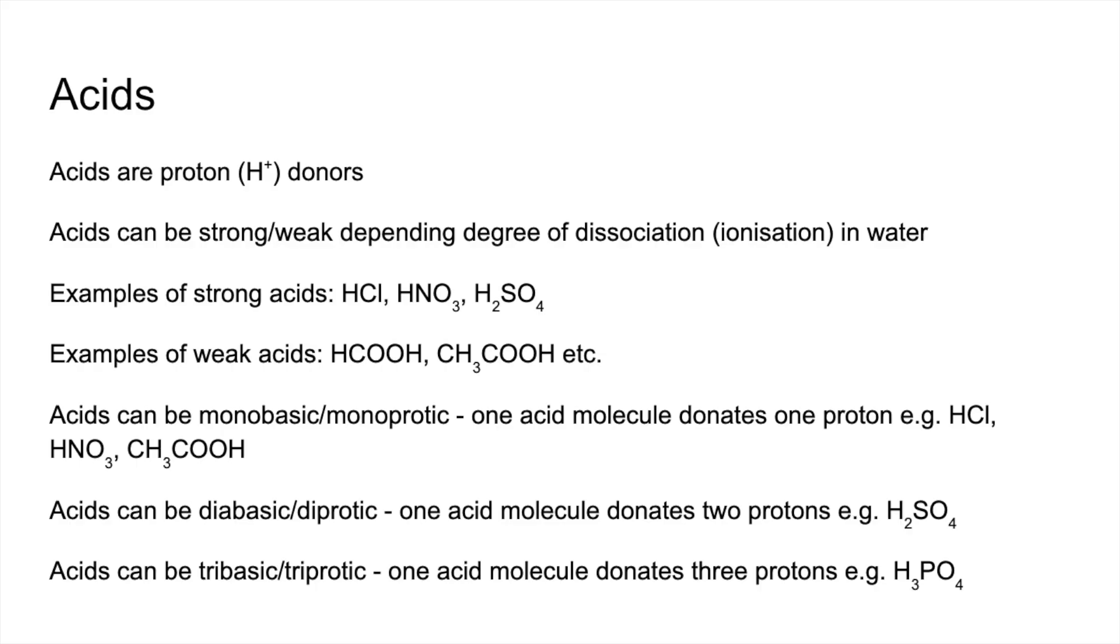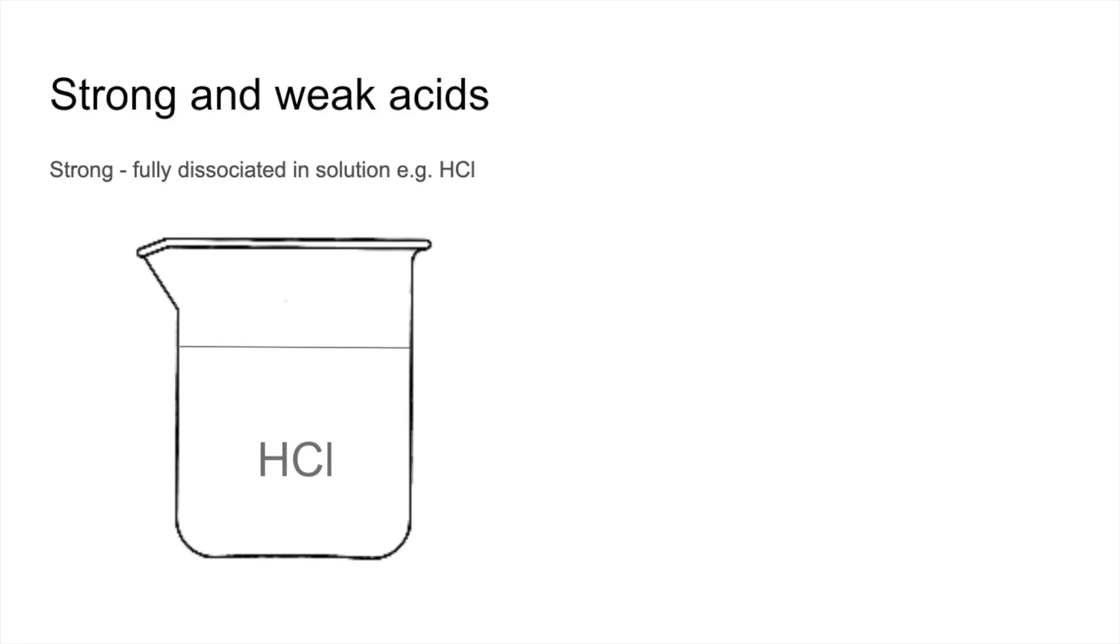So we'll take a closer look now at strong and weak acids. Strong acids are fully dissociated in solution, for example hydrochloric acid. So if you had a beaker with hydrochloric acid in it, it would completely split up, dissociate into its ions. So in that beaker you would have aqueous H plus ions and aqueous Cl minus ions. We use the single headed arrow to represent full dissociation.